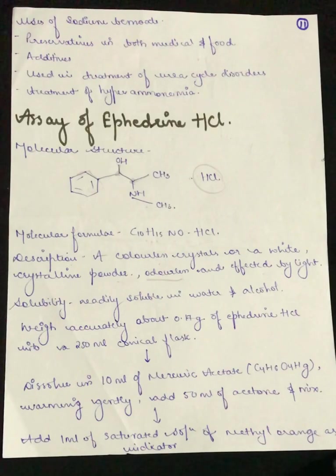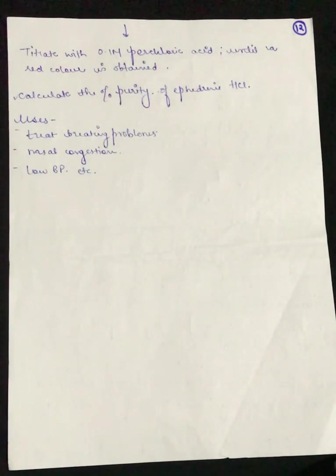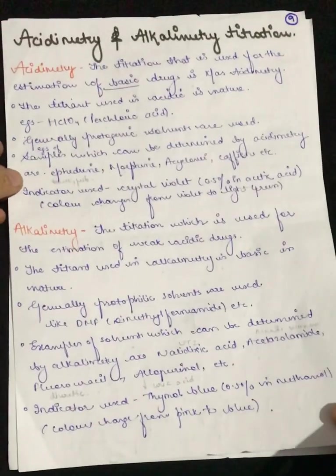The sodium benzoate indicator was 1-naphthol benzene, so if we compare and learn it, it will be easy. Now we will titrate it against 0.1 molar perchloric acid until a red color is obtained. Then calculate the percentage purity of ephedrine hydrochloric acid. The uses include treating breathing problems, nasal congestion, and low blood pressure.